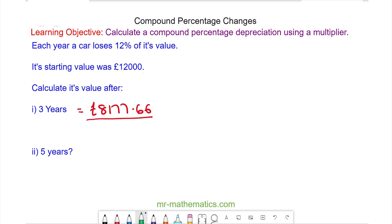Okay let's try and work out for 5 years. So for 5 years we have our multiplier of 0.88 raised to the power of 5 multiplied by £12,000 and this is £6,332.78.